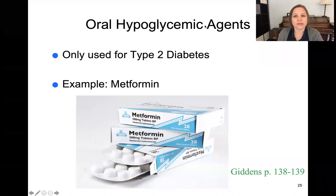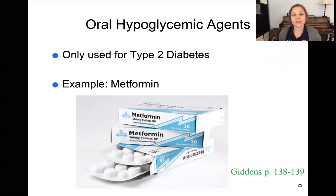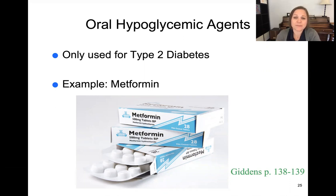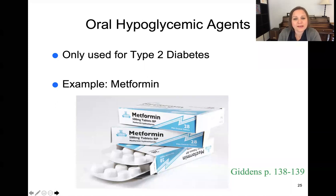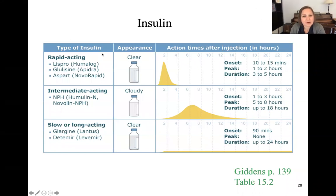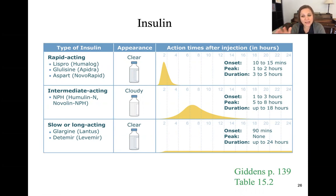In terms of pre-class medications, there are oral agents and insulin. One example of an oral hypoglycemic agent — something that reduces blood sugars used for type 2 diabetics — is metformin, which reduces blood sugar levels and comes as tablets taken once or twice a day. There are also a number of different types of insulin listed in your Giddens text. There are three kinds: rapid-acting, which works quickly but doesn't last long; intermediate-acting, which takes a bit longer to start but lasts longer; and slow or long-acting, which maintains a baseline level for a long period.